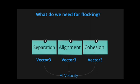And the third one is cohesion, which means that the boids are going to try to stay close to their neighbors to form a cohesive group. So what we are going to do is create a function for each of the rules, and each of them is going to give us a Vector3 that we are going to use to calculate the AI velocity.